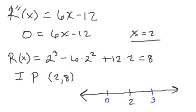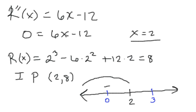We're only concerned about the sign. If I plug 0 into the second derivative, I get 6 times 0, which gives a negative result. So that's going to be negative, meaning we have concave down from negative infinity up to 2. Then plugging in 3: 6 times 3 is 18, and 18 minus 12 is a positive number.